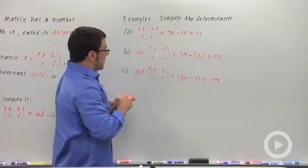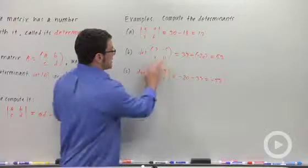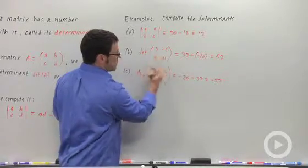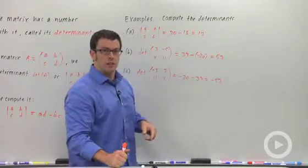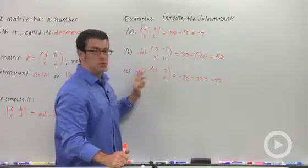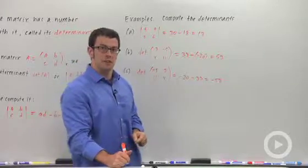Something you should notice about determinants is if you switch two columns, the determinant will turn out to be the opposite of what it originally was. So switching two columns or switching two rows, either way, will change the sign of the determinant.